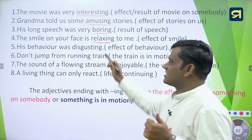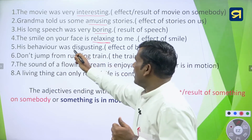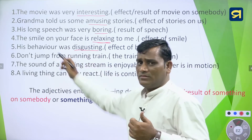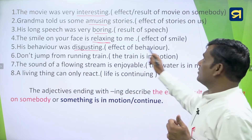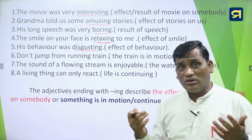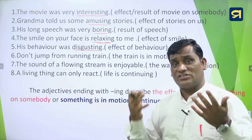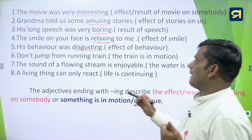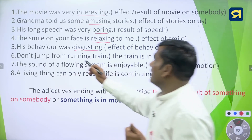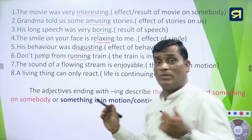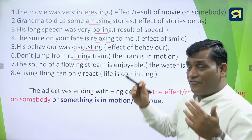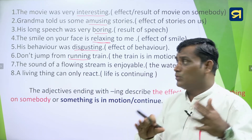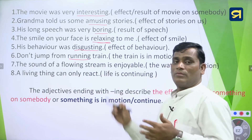'His behavior was disgusting' — why do you feel disgust? Because of the behavior. The effect of behavior makes us feel disgust; it can be shown by the gesture and posture of a person. 'Don't jump from the running train' — here running is used as an adjective in ING form. But here it is not the effect; the train is in motion, something which is continuing. So when something is in motion or continuing, we also use ING form of adjective.